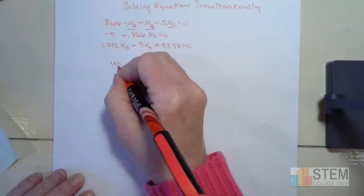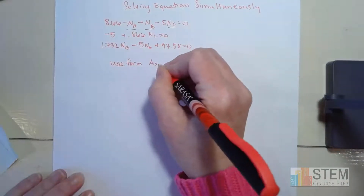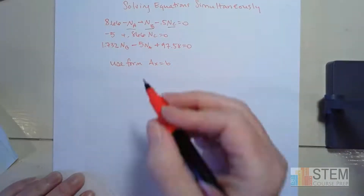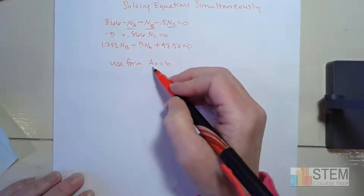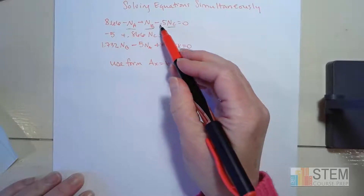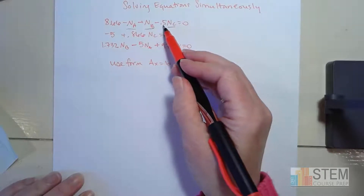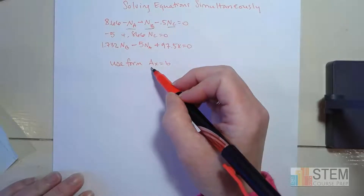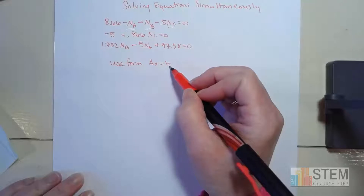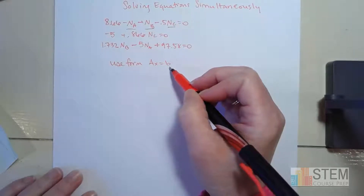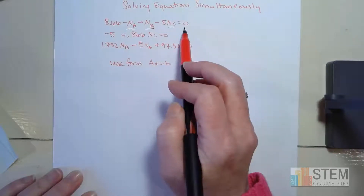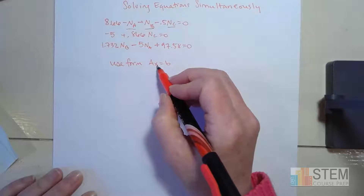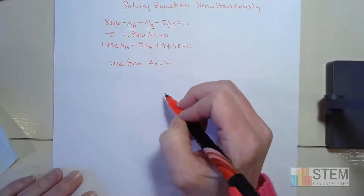The way we're going to do this is we're going to use the form Ax equals B. A is going to be a matrix of coefficients that are multiplied by our unknowns — so this 0.5 or negative 0.5, that's the coefficient for Nc. All these coefficients go in matrix A. Matrix B consists of the numbers that are by themselves, like 8.66 — no variable next to that, so we move it to the right. And x is going to be a vector that has our unknowns in it.